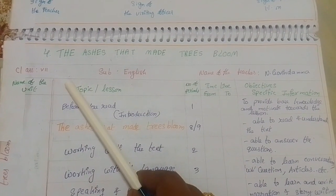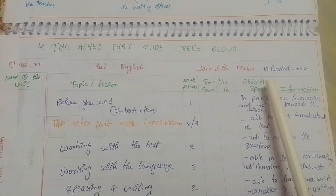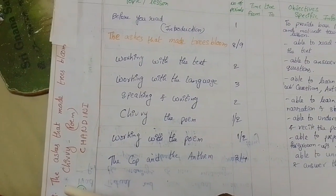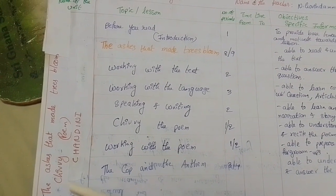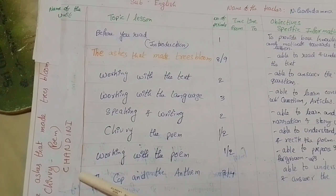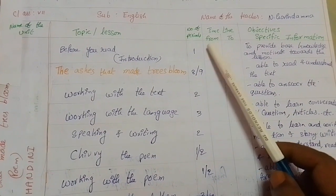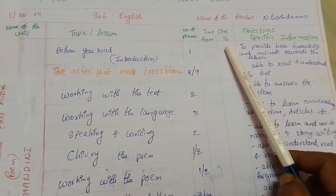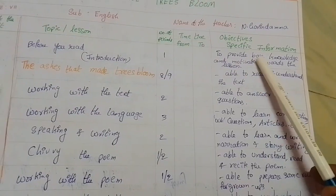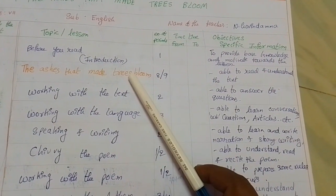First we write class, subject English, name of the teacher — Govindamma, you write your name here. We write the topic names here: 'The Ashes That Made Trees Bloom,' the Chivi poem, and Chandini the supplementary lesson. For the periods timeline, write the dates according to your schedule.